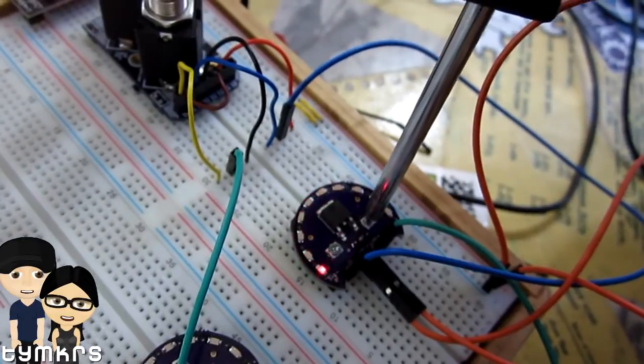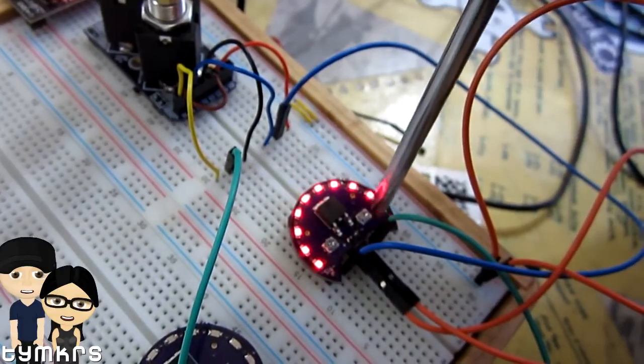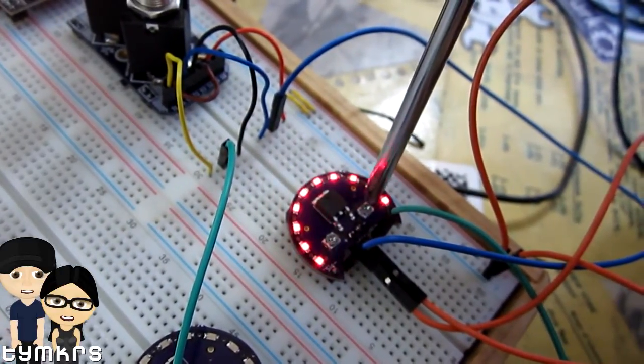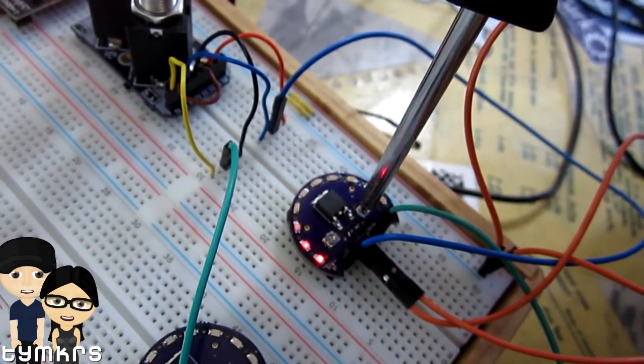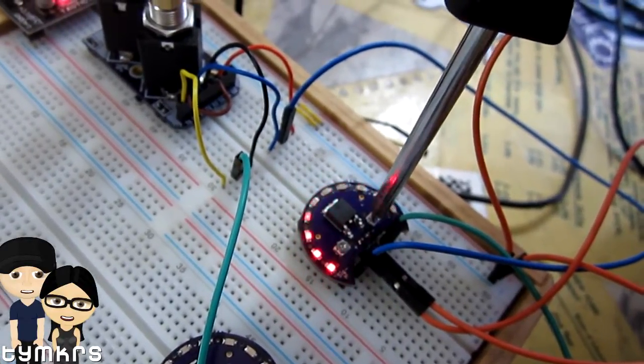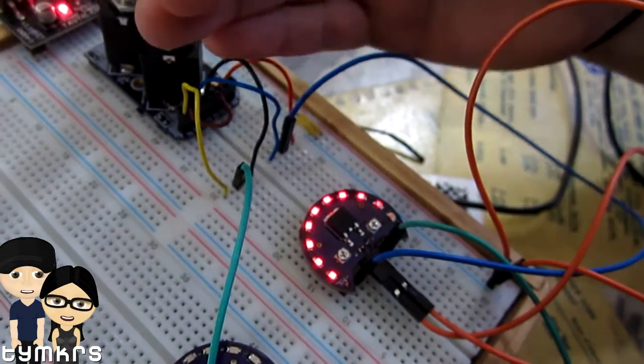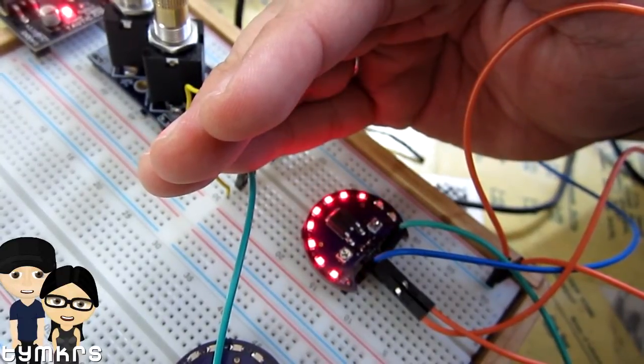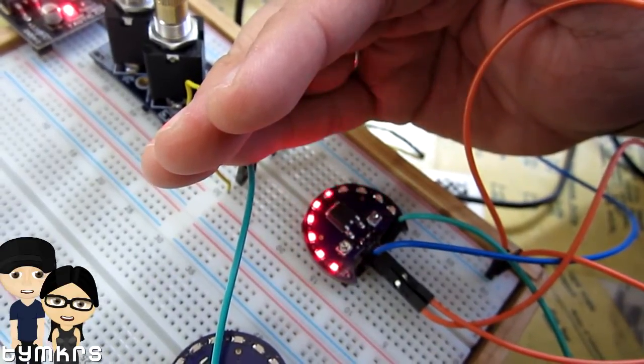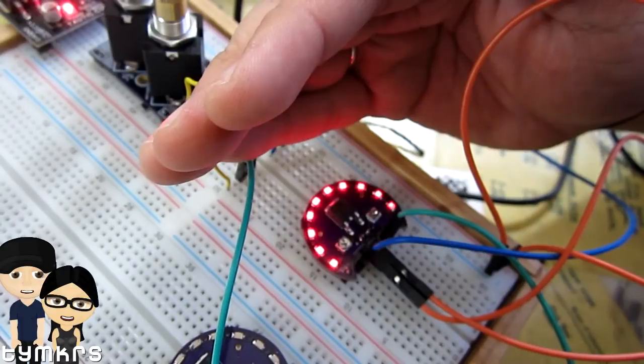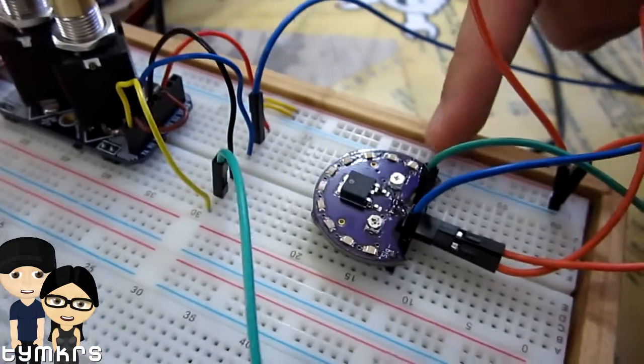And then if you want to calibrate it to saturate the lights even more, just move these, just turn this potentiometer a bit more. If you want it to show change more drastically. Transients. The transients. So that is this working on a breadboard.